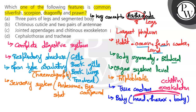Now, the defining feature of Arthropoda is jointed appendages — jointed legs are present. In most cases, three pairs of legs are present, which means a total of six legs.